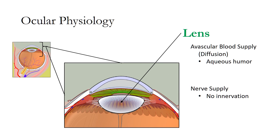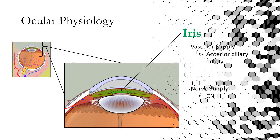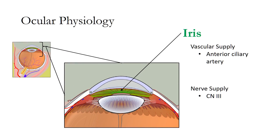The crystalline lens of the eye is avascular and receives its nourishment from the aqueous humor. It has no innervation. The iris is supplied by the ciliary artery and is innervated by the third cranial nerve.